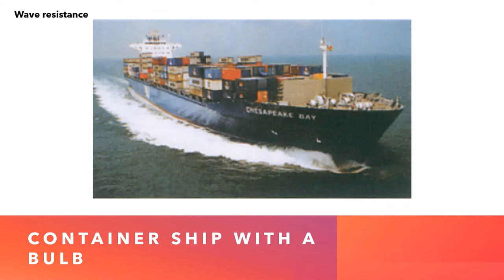The third type of resistance is wave resistance. You can see here a container ship with a very well-formed bulbous bow. Wave resistance is a result of the wave systems along the hull that originate from differences in pressure. On certain ships, the use of a bulbous bow can significantly decrease wave-making resistance. The bulb generates its own wave system, which is designed to interfere negatively with the ship's wave system, so the two wave systems neutralize each other.